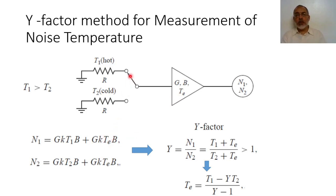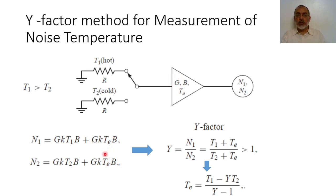On the other hand, when the amplifier is connected to the cold matched load, noise two equals the noise due to the cold matched load plus the internal noise. So N2 equals G·K·T2·B plus G·K·Te·B, where Te is the equivalent noise temperature of the amplifier or circuit.